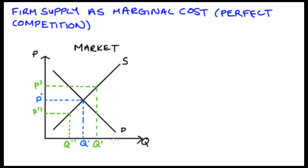We need to know the relationship between the price and the market and how much the firm will supply. To make this connection we need to know our firm's profit maximizing condition that price is equal to marginal cost.